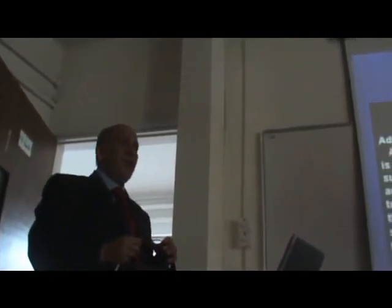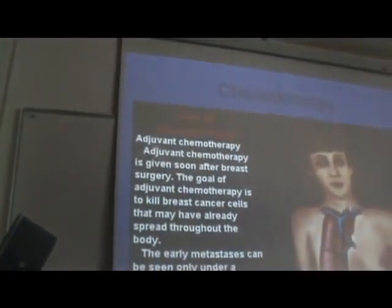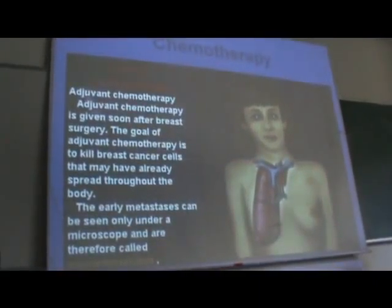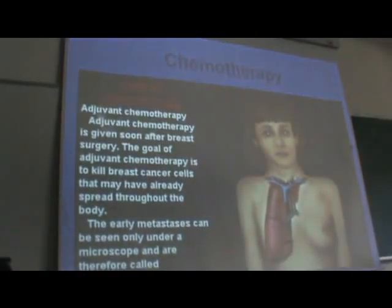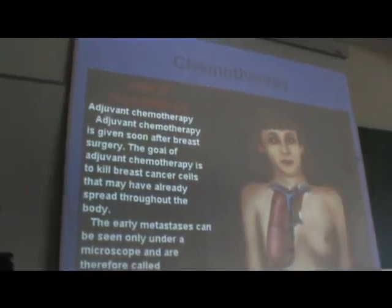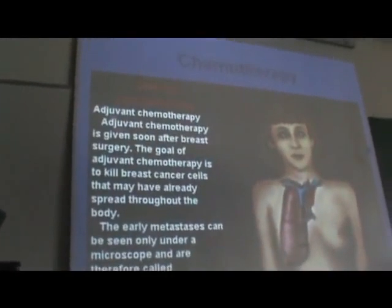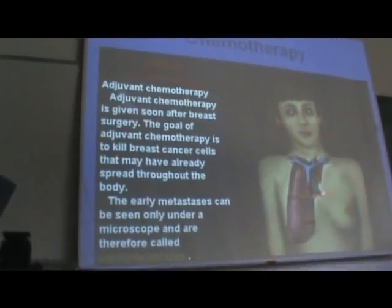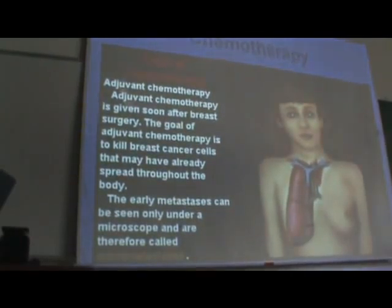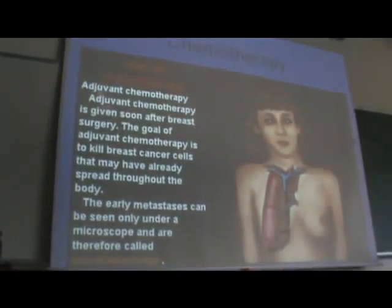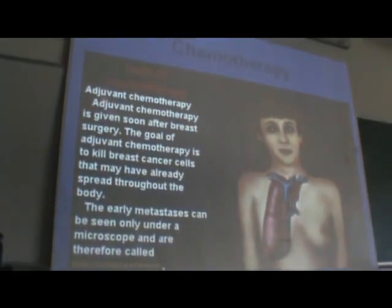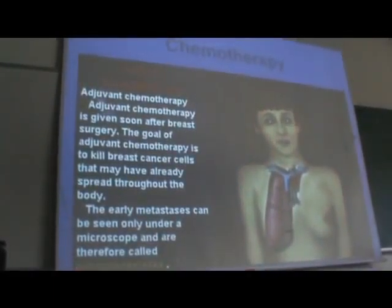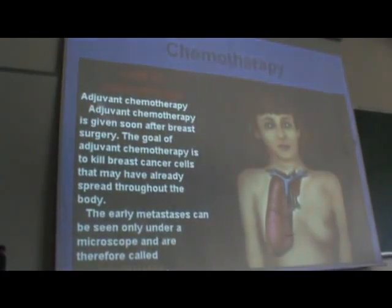When we use chemotherapeutic agents and we don't have any evidence of disease — for example, a patient with CA breast having a T1 tumor and no lymph nodes — if the tumor is more than one centimeter, we give chemotherapy. We may have micrometastasis in the lung or liver, so we give chemotherapy without monitoring for response. We assume micrometastasis exist and that chemotherapy will give a survival advantage to the patient.